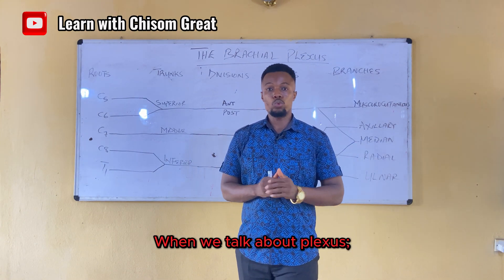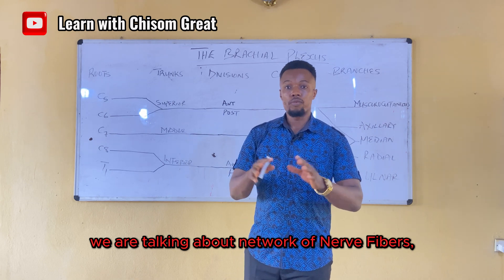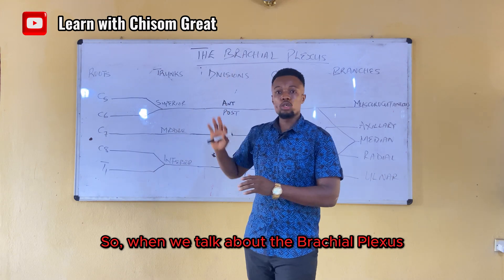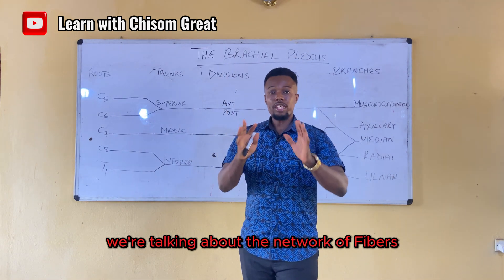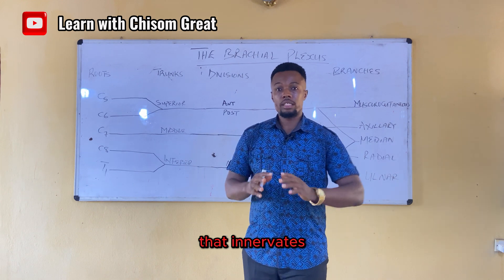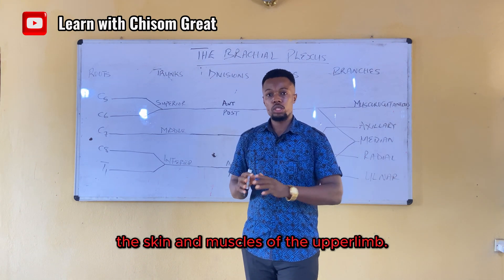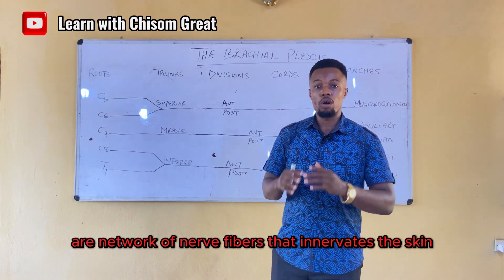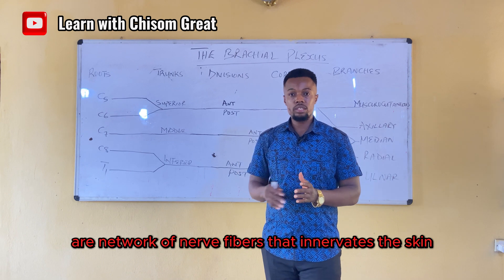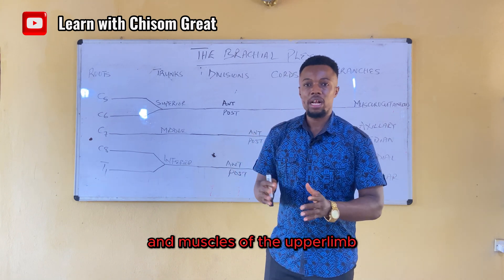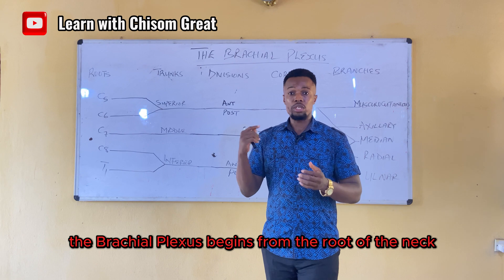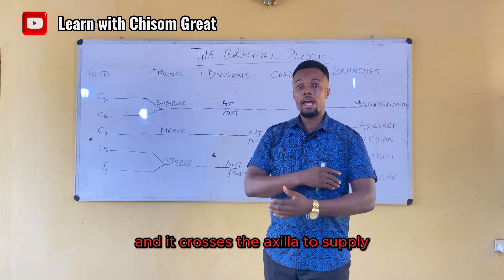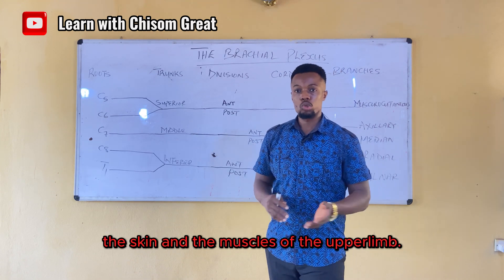When we talk about a plexus, we are talking about a network of nerve fibers, a collection of nerve fibers. When we talk about the brachial plexus, we are talking about a network of fibers that innervates the skin and muscles of the upper limb. The brachial plexus begins from the root of the neck and crosses the axilla to supply the skin and muscles of the upper limb.